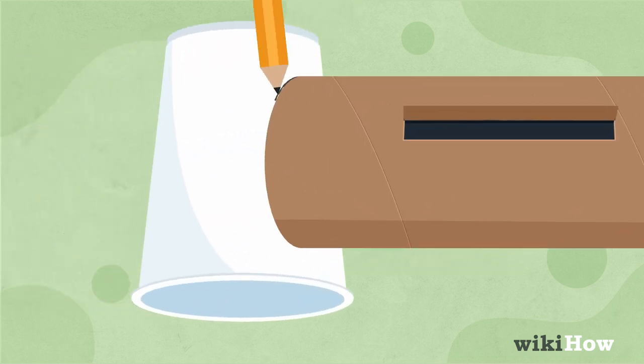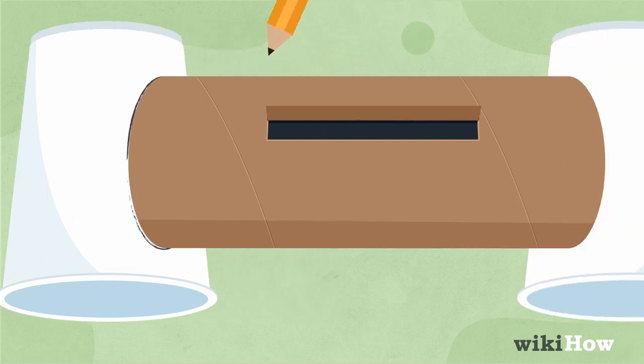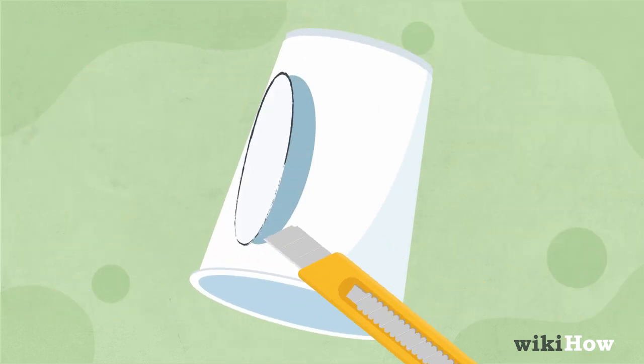Trace the open end of the toilet paper roll onto one side of each of the cups near the base. Then, cut out the circles you traced.